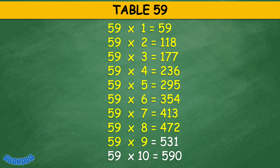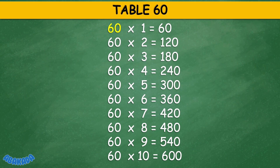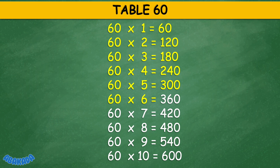59 times 9 equals 531, 59 times 10 equals 590. Table 60: 60 times 1 equals 60, 60 times 2 equals 120, 60 times 3 equals 180, 60 times 4 equals 240.